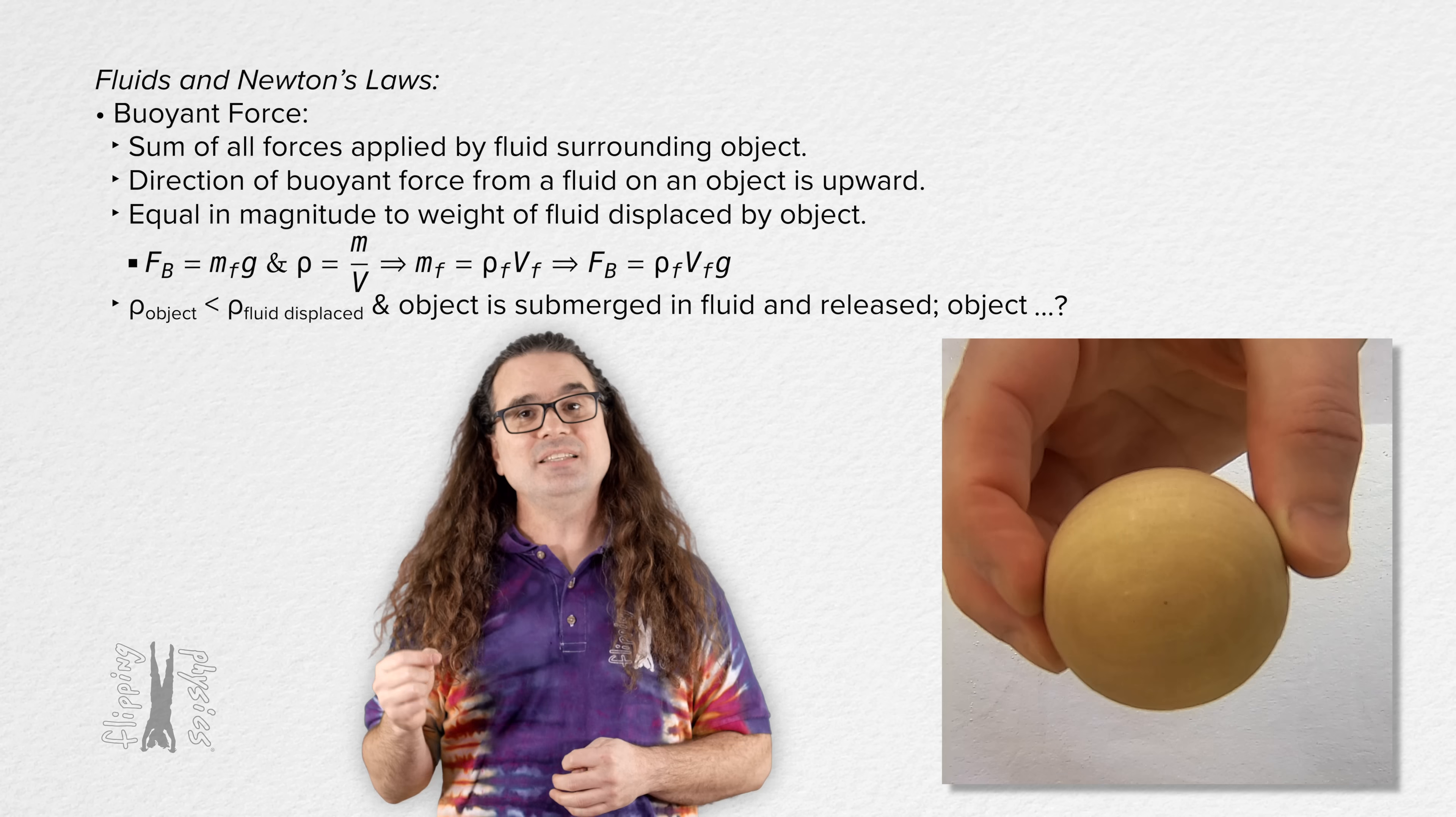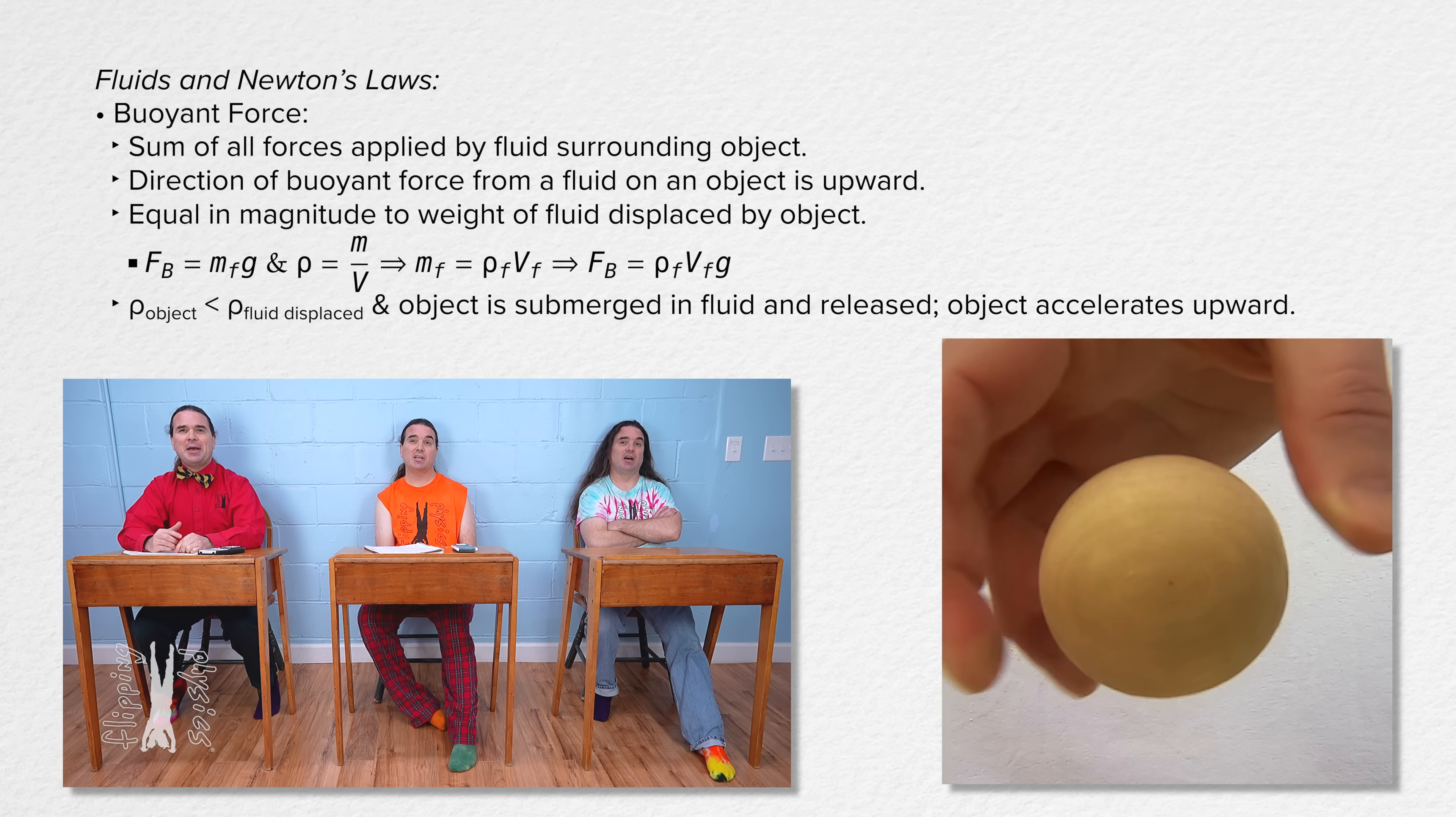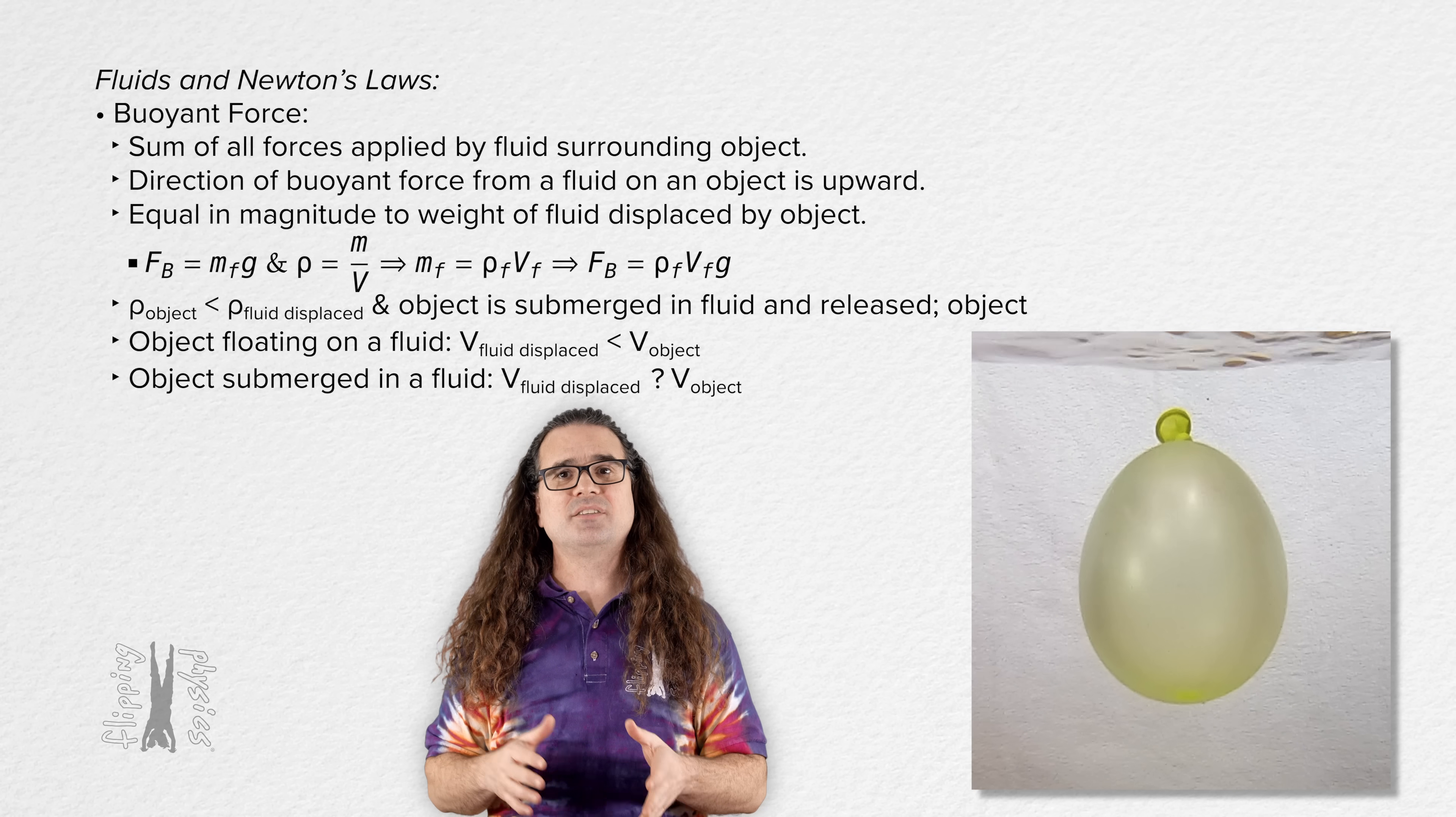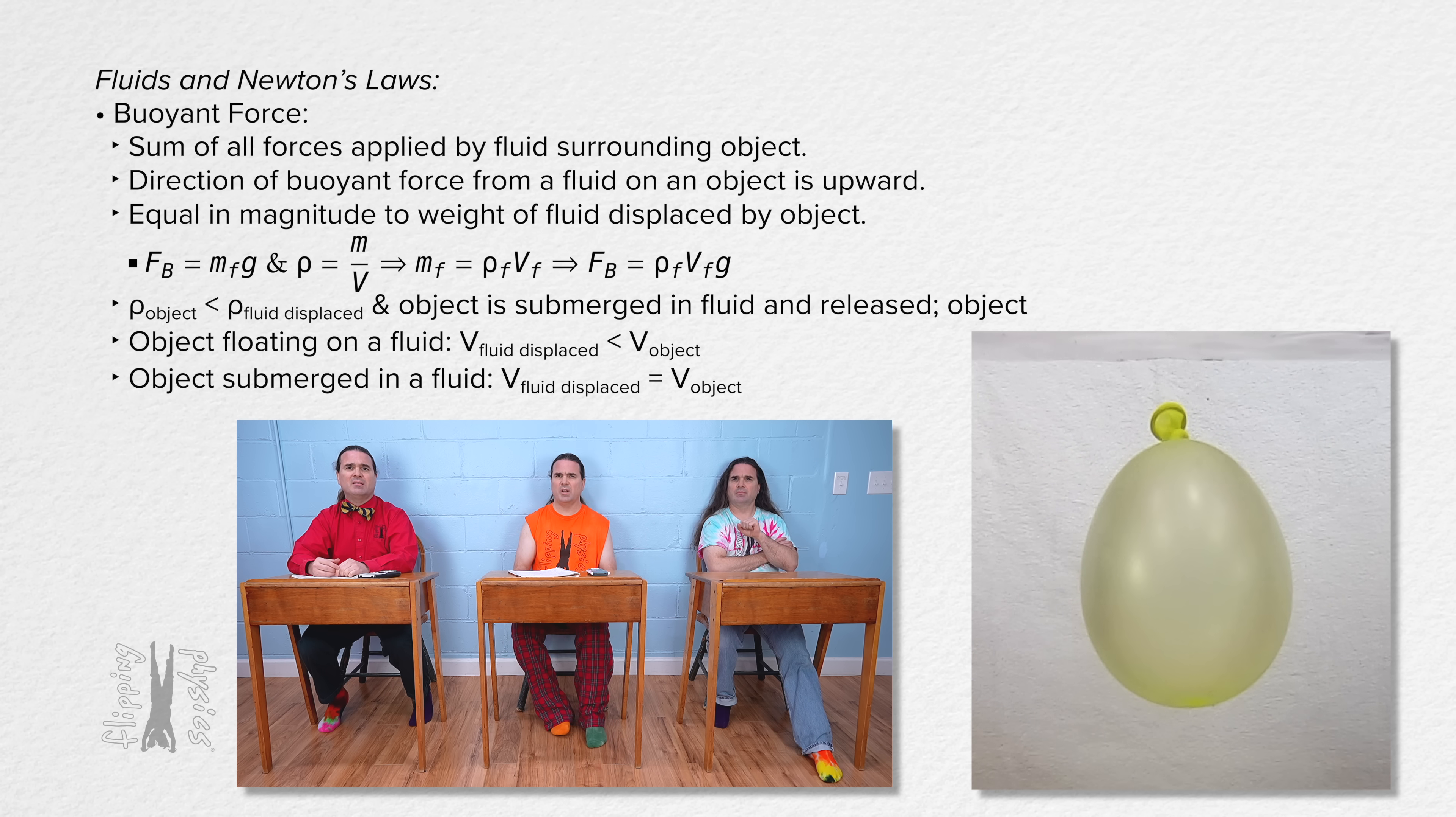Class, if the density of an object is less than the density of the fluid displaced by the object and the object is submerged in the fluid and then released, what will happen to the object? It accelerates upward. Correct. Class, when an object is floating on a fluid, the volume of the fluid displaced by the object is blank the volume of the object. Fill in that blank. Less than. Correct. Class, when an object is submerged in a fluid, the volume of the fluid displaced by the object is blank the volume of the object. Fill in that blank. Equal to. Perfect.